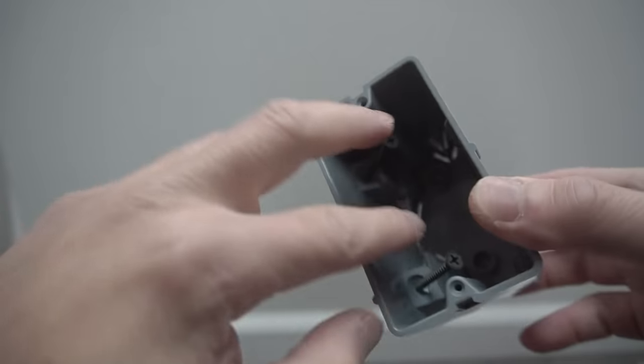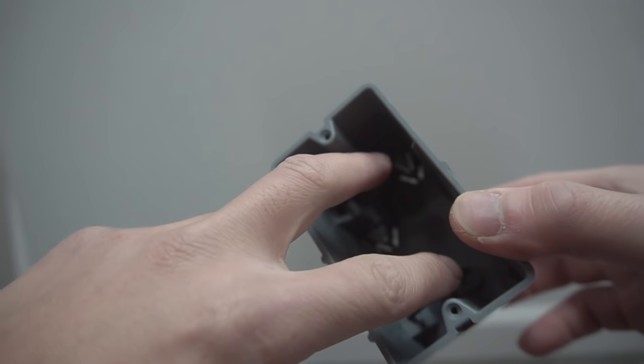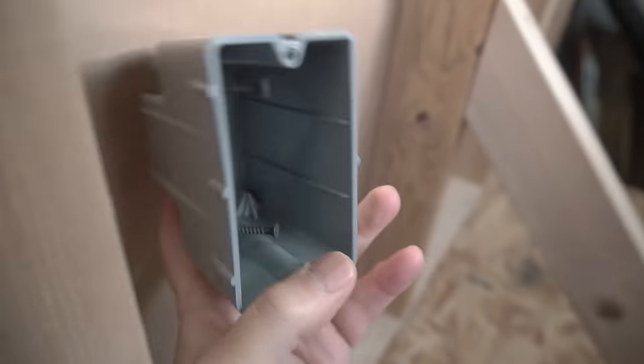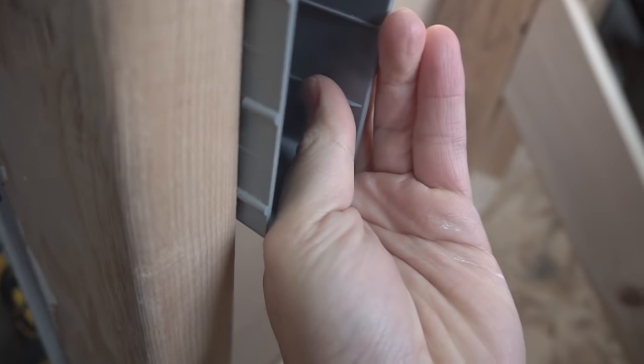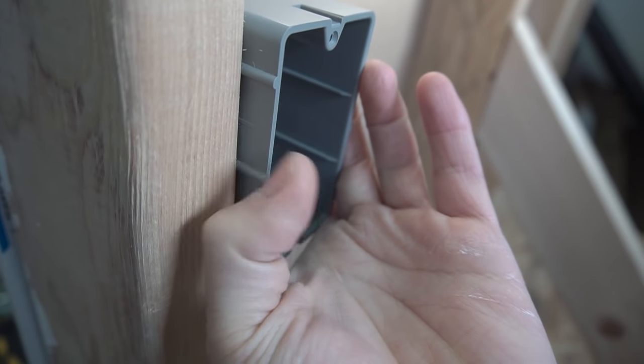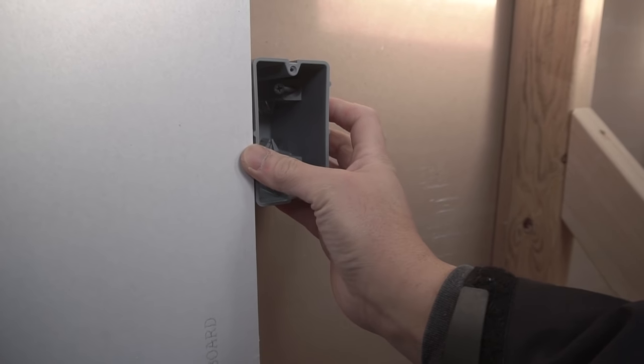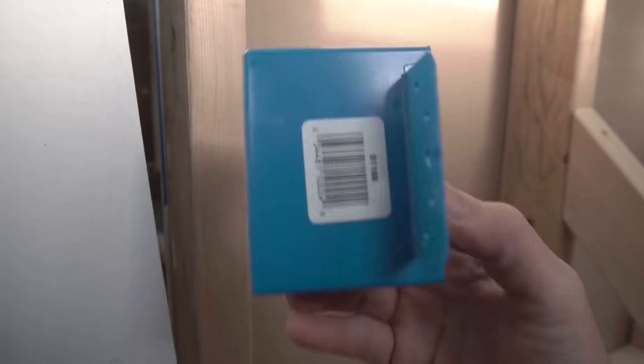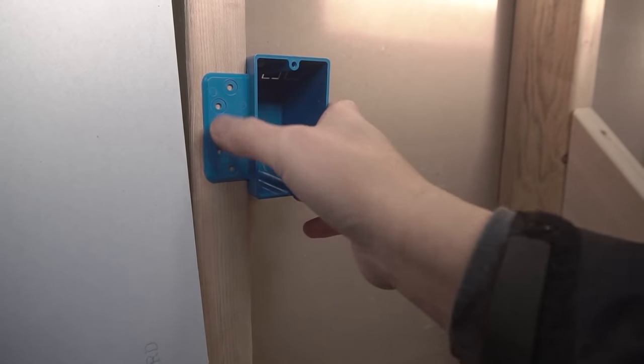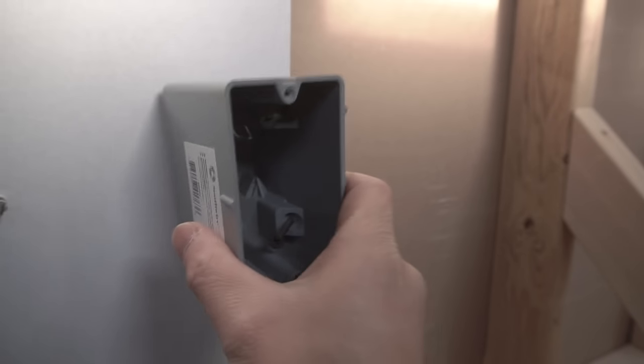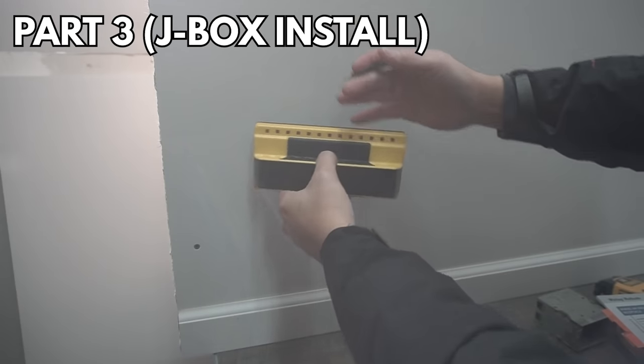I'm using this electrical box which has these screws here. These J-boxes have indicator marks showing how deep to go onto the stud. This gap gets filled with drywall and should be flush. This type is easy because you set it, put your screws on, and it automatically becomes flush.